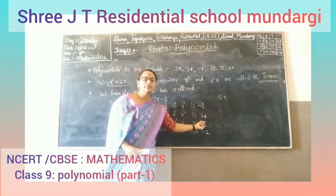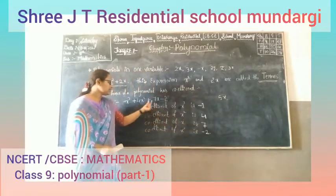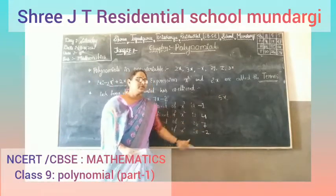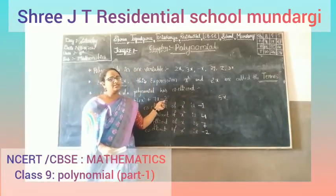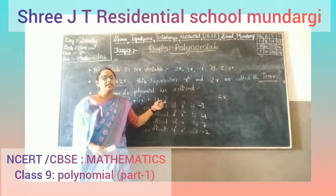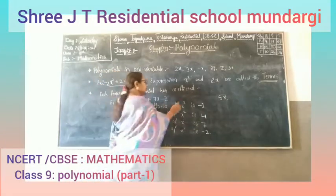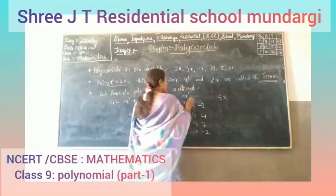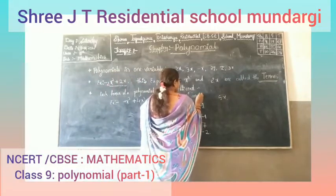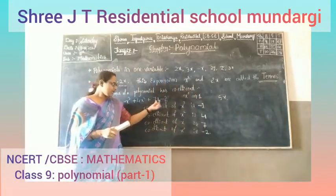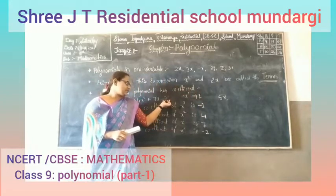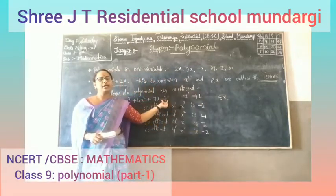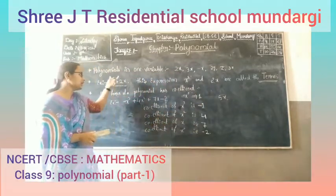Continuing with the same example, the coefficient of x is 7. For the constant term minus 2, we can write it as the coefficient of x to the power zero, since x to the zero is always equal to 1. So the coefficient of x naught is minus 2. This is the introduction to polynomials.